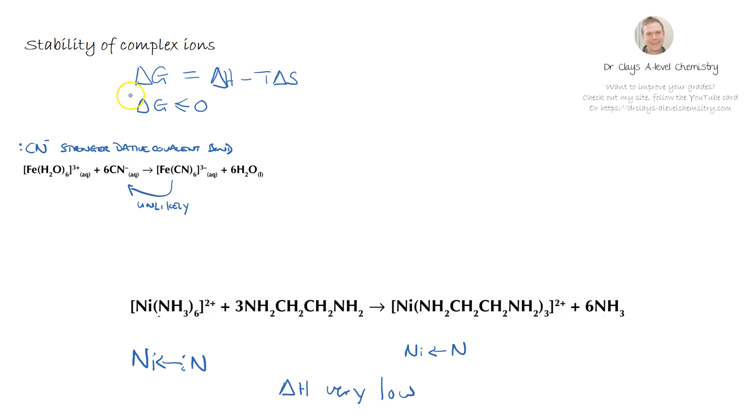Since the enthalpy change is going to be very low, that means the Gibbs free energy is going to be more dominated by the T delta S and importantly the entropy effect that we see here. What this ends up meaning is that in this reaction we have got four particles on the left hand side because we have got the complex and the three ligands. This is a bidentate ligand.